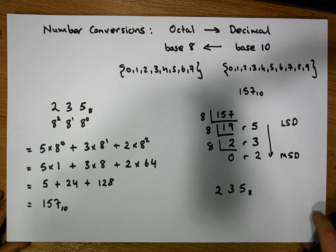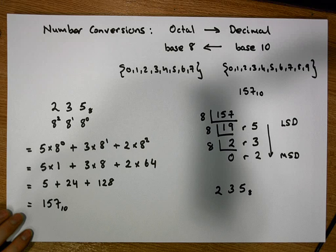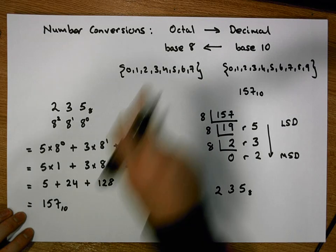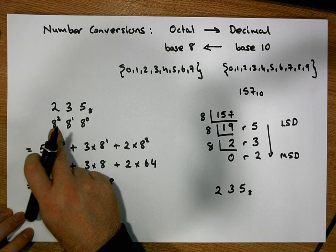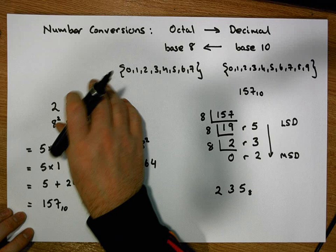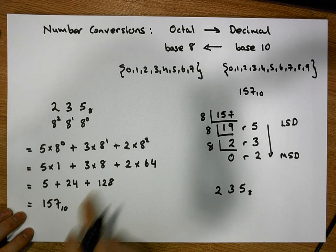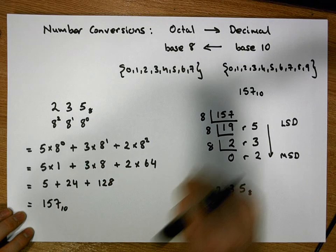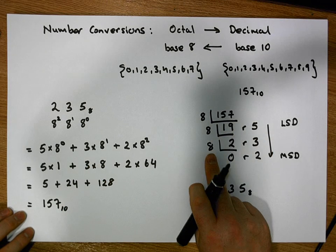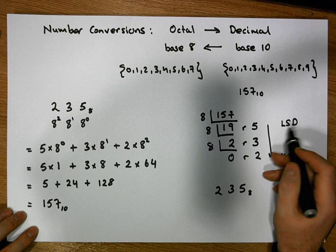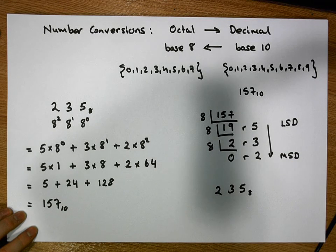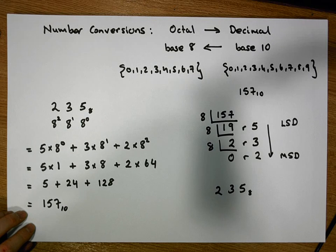I hope that was informative and helped you with number conversions from octal to decimal. Just to recap: in a particular base, each position within the number represents how many multiples of the powers of the base there are, and converting to decimal is just a summation of those products. Converting back to a non-decimal base means successively dividing by the new base — the least significant digit is on top and the most significant digit is on the bottom. Thank you for your time. My name is Jonathan Lambert with the Mathematics Development and Support Service at the National College of Ireland.